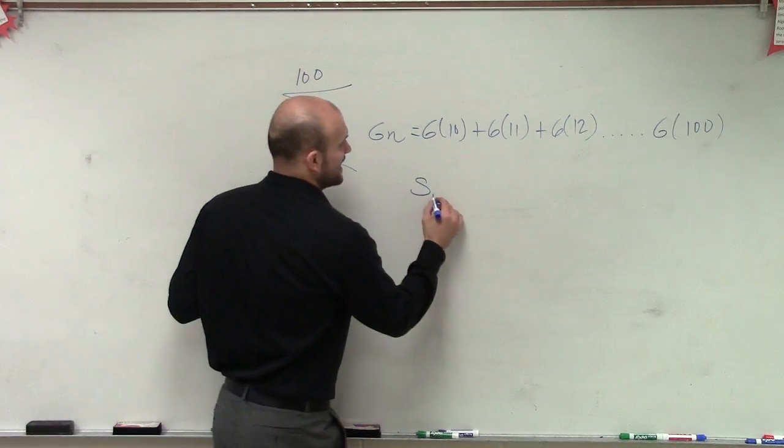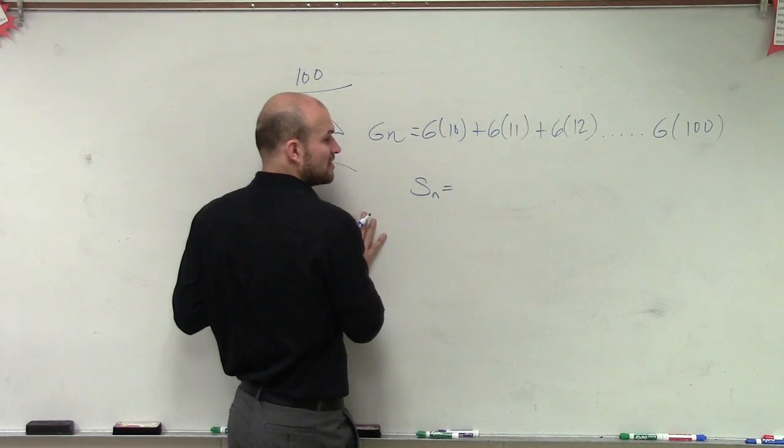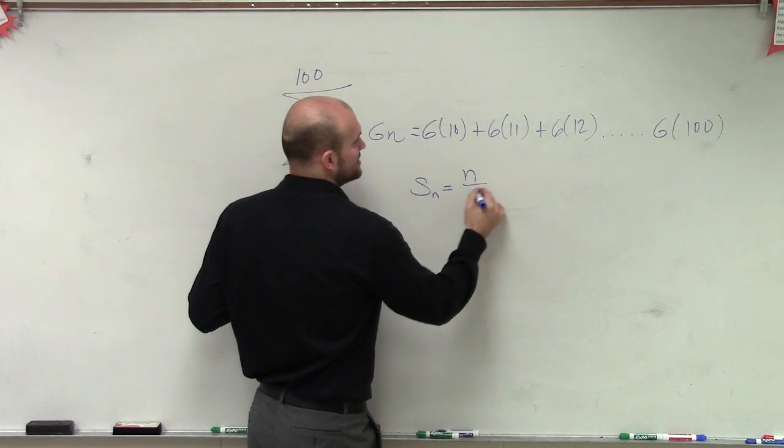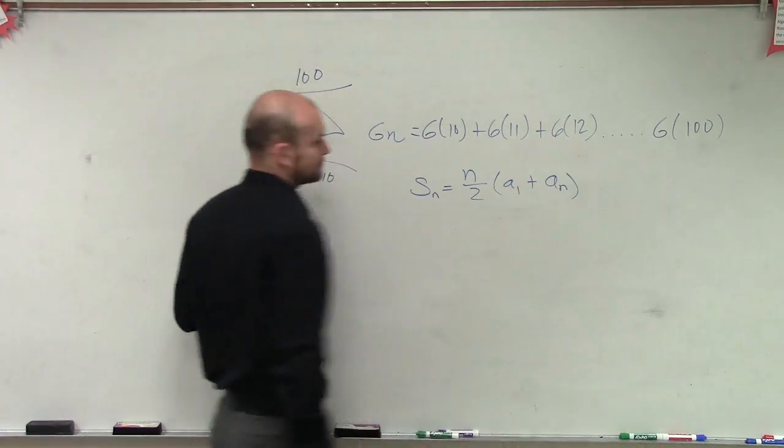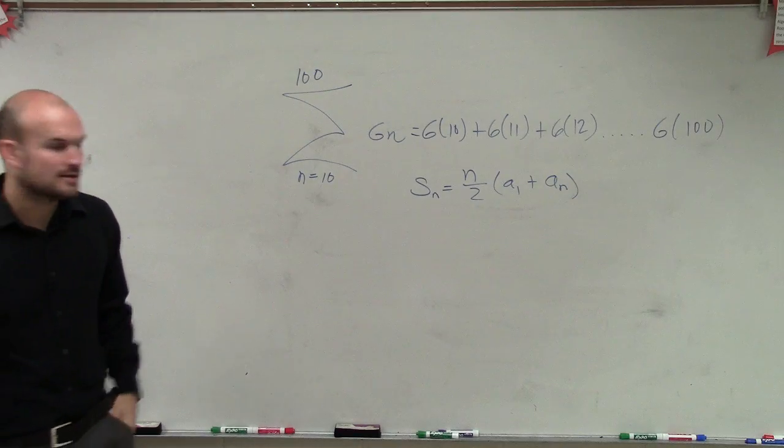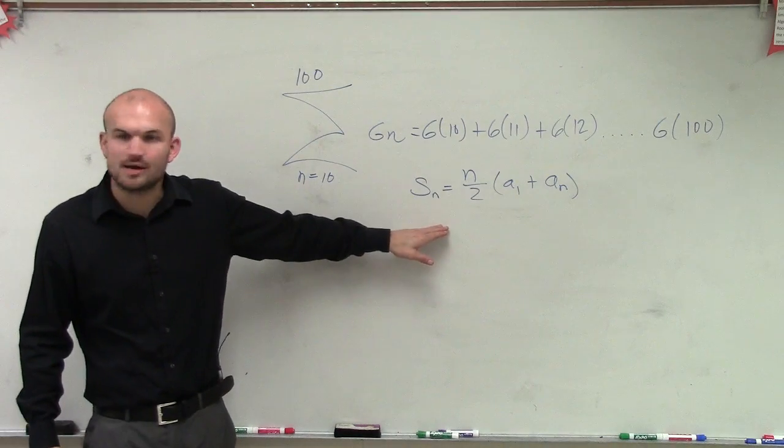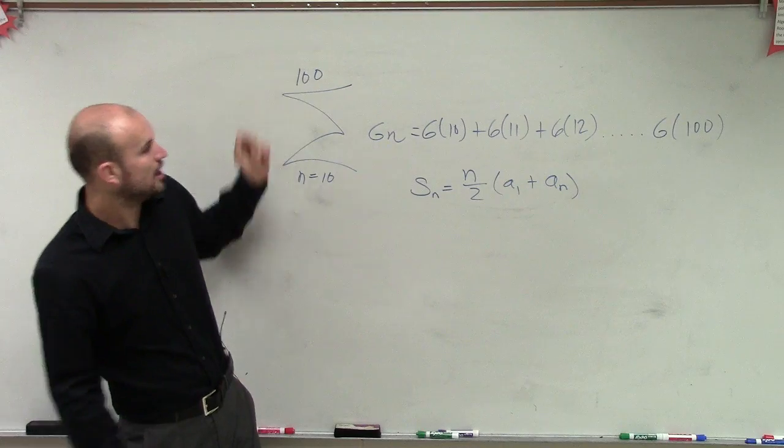And remember, our formula stated that s of n equals, so the sum of our arithmetic sequence is going to be n divided by 2 times a sub 1 plus a sub n, all right? So what they're asking us to do is to find the sum of this series at 100.